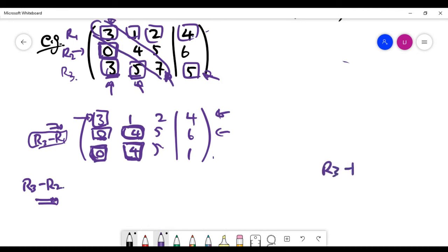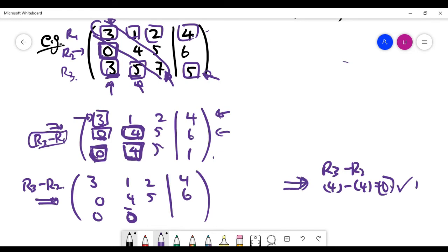Because if I use row three minus row two, it's going to be four minus four is going to be zero. And that's what we want. And of course, first of all, we can write the first two lines. They are not changed.